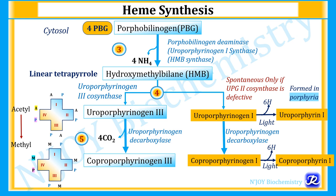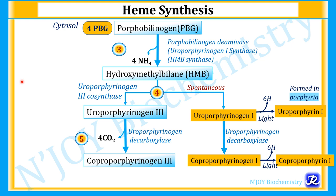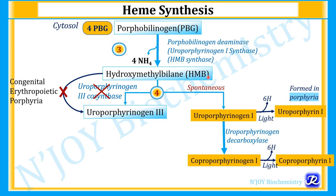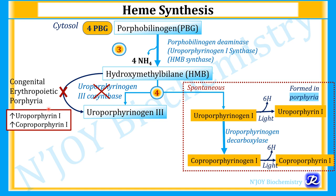If uroporphyrinogen 3 cosynthase is defective, there is no formation of uroporphyrinogen 3 from hydroxymethylbilane. This occurs in congenital erythropoietic porphyria. Instead, hydroxymethylbilane spontaneously forms uroporphyrinogen 1, leading to uroporphyrin 1; then coproporphyrinogen 1 forms via uroporphyrinogen decarboxylase, producing coproporphyrin 1. Both uroporphyrin 1 and coproporphyrin 1 are excreted in the urine and feces of these patients — hence their increased excretion is diagnostic of congenital erythropoietic porphyria.